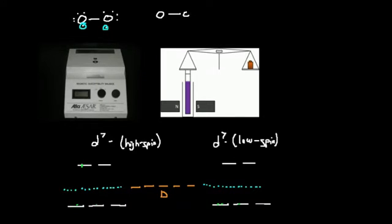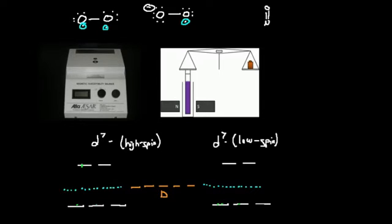Let's look at another example. This molecule is termed superoxide. In this case, there's only one unpaired electron, so it's paramagnetic. Another example that might not be so obvious is nitric oxide. If you draw in all the electrons, you would see there's an unpaired electron on the nitrogen, so nitric oxide is also paramagnetic.